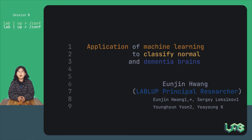Hello, my name is Eunjun Hwang from LabLove and I'm going to talk about how machine learning approaches can be used to classify normal and diseased brains — in this case dementia — by using the brain's electrical signals. This work is done in collaboration with the Brain Science Institute of Korea Institute of Science and Technology.